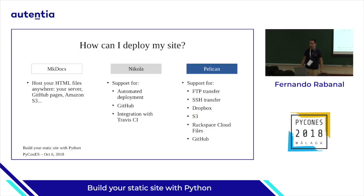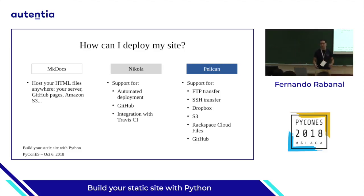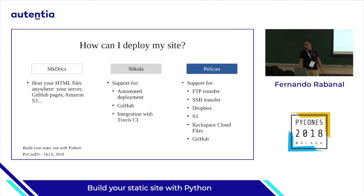So how can I deploy my site? In MkDocs, you move the folder wherever you want. In Nikola, you have support for automatic deployment, support for GitHub, integration with Travis CI — a library for doing continuous integration. In Pelican, you have support for FTP, SSH, Dropbox, S3, Rackspace, GitHub. So you have lots of options to deploy the page automatically.